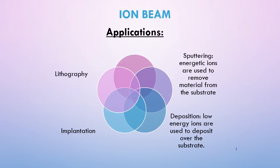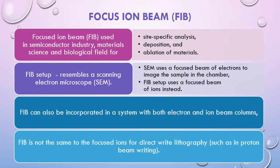Ion beam application has been used in many processes. We already saw ion beam lithography previously. We can also perform implantation, sputtering, and also deposition using the ion beam. Focused ion beam, or FIB, is a technique used particularly in the semiconductor industry, material science, and also in the biological field for site-specific analysis, deposition, and ablation of material — ablation meaning material removal.